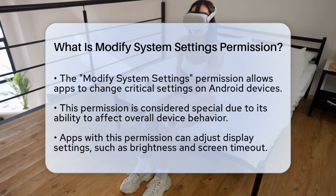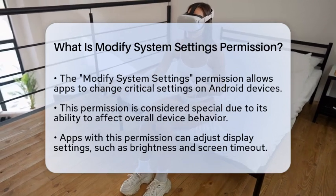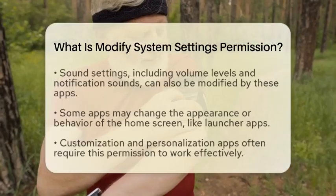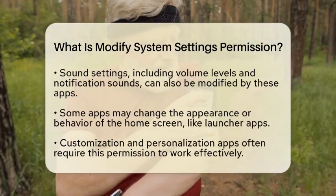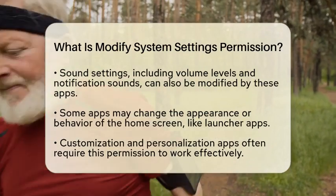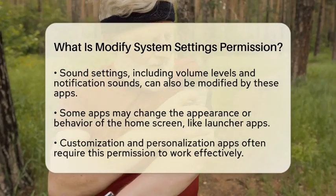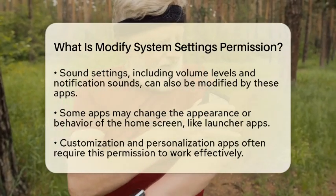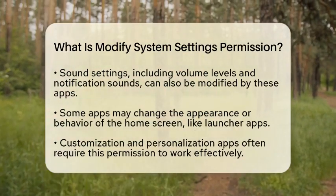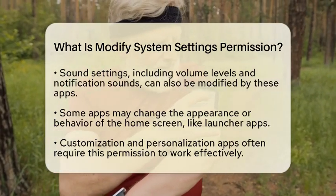When an app has this permission, it can do things like adjust display settings, such as brightness or screen timeout. It can also modify sound settings, including volume levels or notification sounds. Some apps might even change how your home screen looks or behaves, like altering launcher settings.